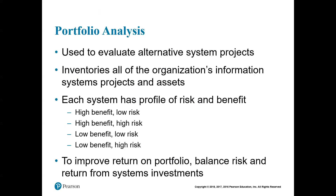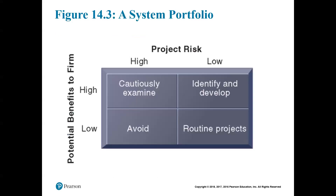High benefit, high risk — we'll monitor it but probably won't do it. Low benefit, low risk — we'll probably just do it; it won't cost as much and we won't get much, but maybe that's the automation we talked about in systems development. Low benefit, high risk — we'll never do it. So you avoid low benefit/high risk, examine high/high but usually don't proceed, develop low risk/high benefit, and routine low/low projects we'll just do anyway.